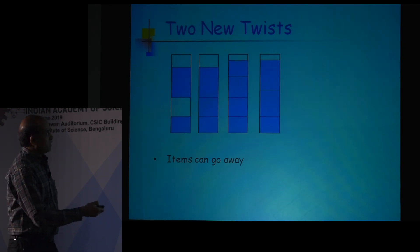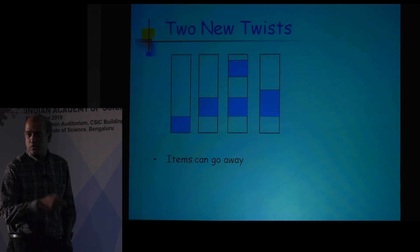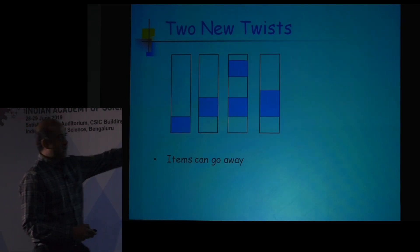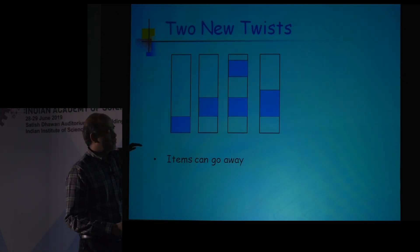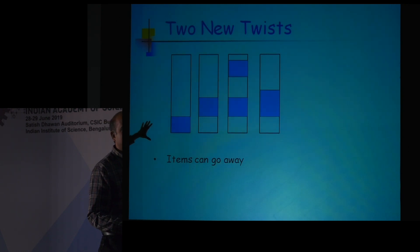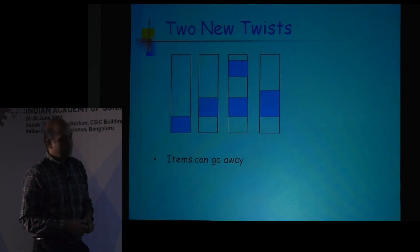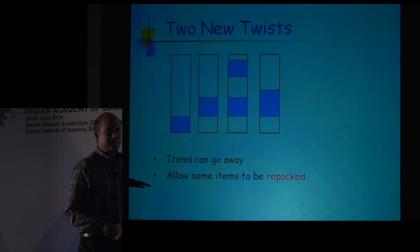At some point an item goes away, then another goes away, and so on. In this setting you are doing very poorly — you could have fit everything in one bin, but because of how you packed it, the situation looks fragmented. So I will also allow you to repack some of these items.